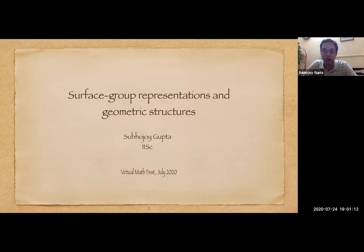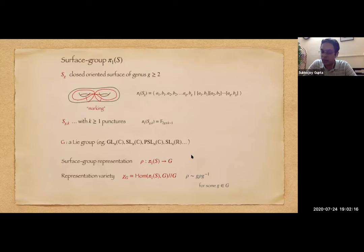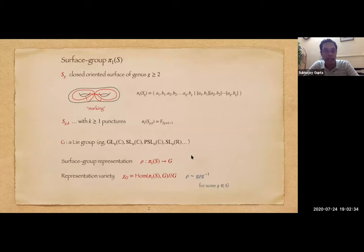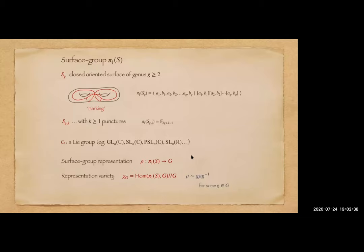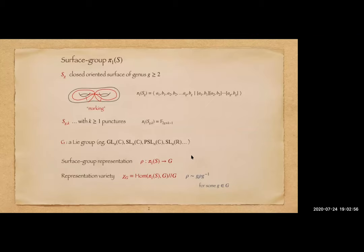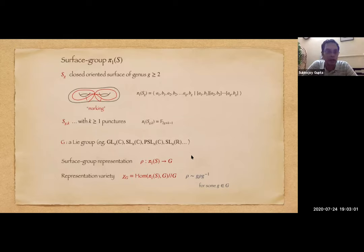This is the title of my talk. Let me begin by saying what these terms in the title mean and giving a broad overview. A surface group is nothing but the fundamental group of a surface. For most of the talk, S will be a closed and oriented surface of genus G greater than or equal to 2. The fundamental group of such a surface has this well-known presentation with 2G generators and one relation. Such a collection of loops that generate the surface group will be called a marking on the surface. Later in the talk, the surface S could have punctures, and in this case the fundamental group is just the free group.